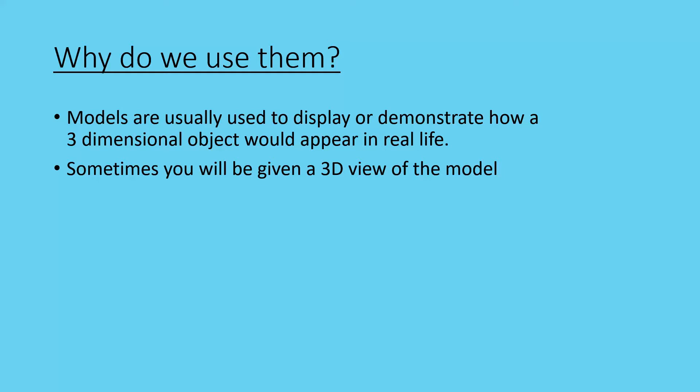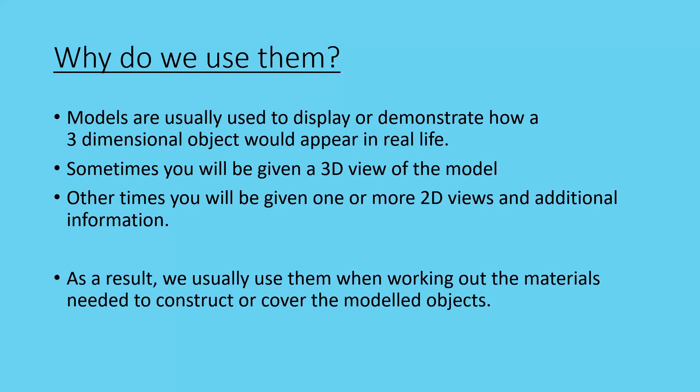of the model - could be a set of stairs or a swimming pool or something like that - that you're looking at from an isometric or oblique view. Sometimes they give you a 2D view like the floor plan of a house, and they give you some other information such as the height of the walls, and you have to calculate the surface area of them. As a result, we usually use them when working out